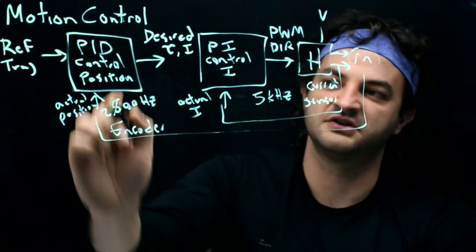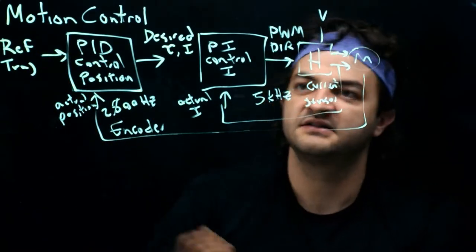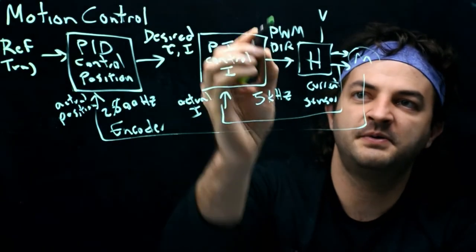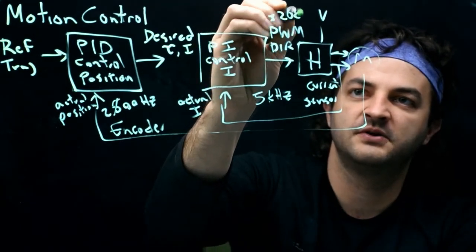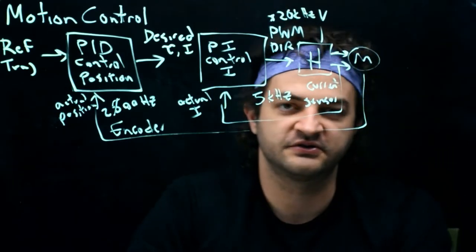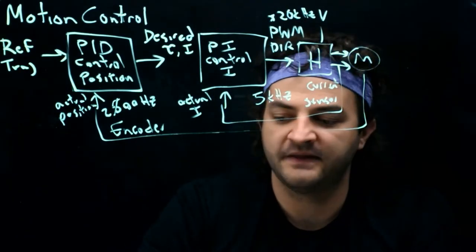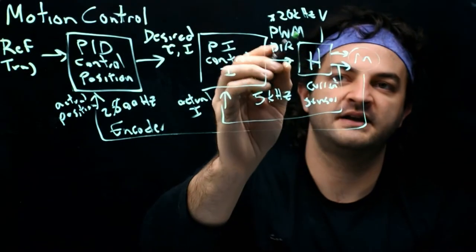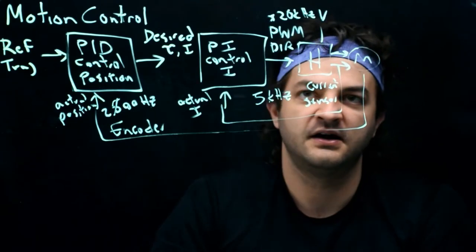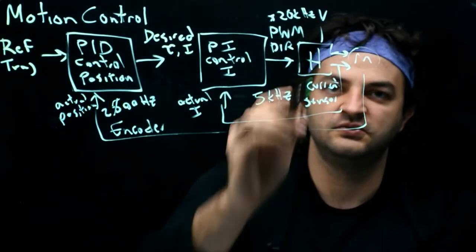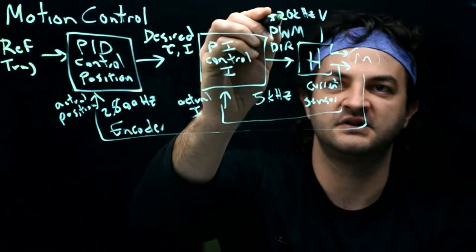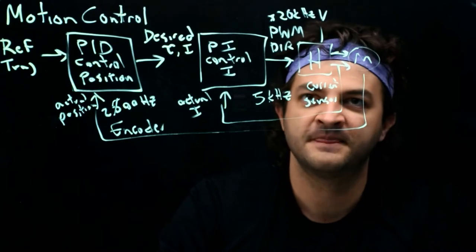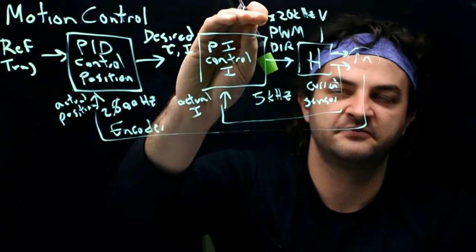So 200 times a second we'll read the position of the motor, compare it to the trajectory, and create a desired torque. When we output PWM, we'll do fast PWM — about 20 kilohertz. The electrical time constants filter out that 20 kilohertz wave, averaging out the voltage we're applying via the H-bridge to make current through the motor. As long as the PWM frequency is faster than the RL circuit's low-pass filter inside the motor, the PWM frequency will be averaged.